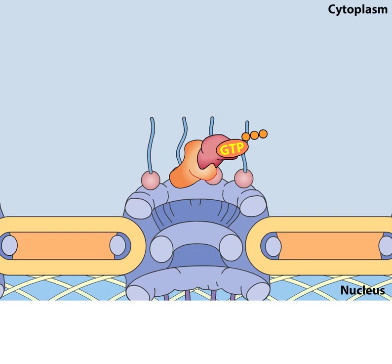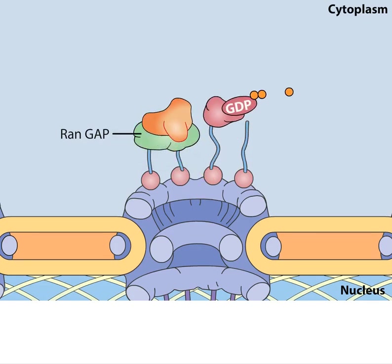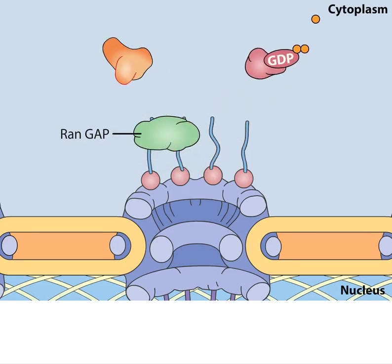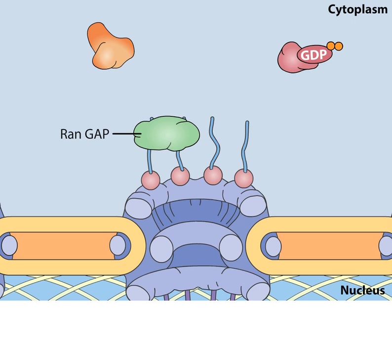A protein in the cytoplasm called RAN-GAP for GTPase-activating protein stimulates RAN to hydrolyze its GTP to GDP, an action that triggers RAN to release importin back into the cytoplasm.